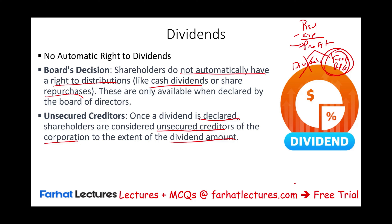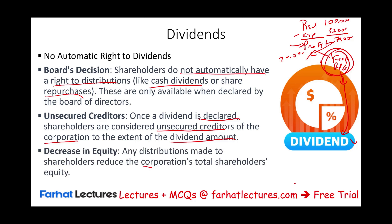Remember, dividends come out of retained earnings. Any distribution to shareholders reduces corporate shareholders' equity because the dividend comes out of retained earnings — you first put profit into retained earnings, then take it out as dividend. For example, if the company made $70,000 in net income and wants to distribute $20,000, the remaining $50,000 stays in retained earnings.